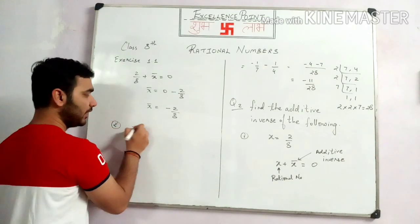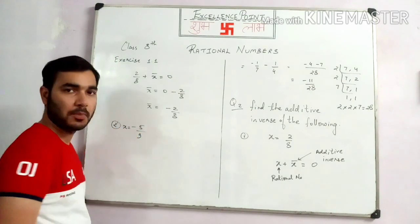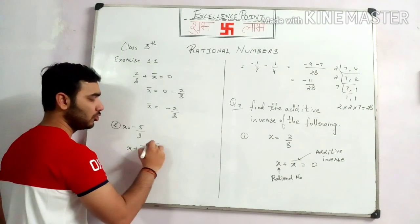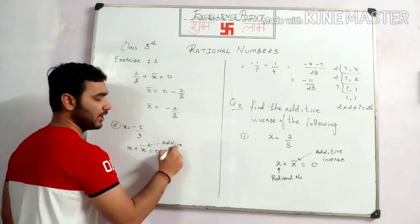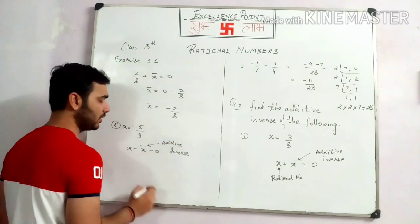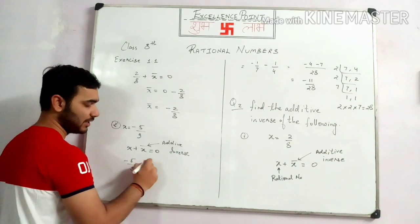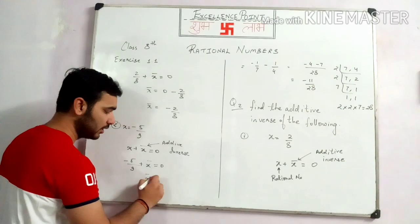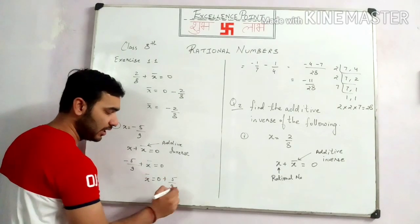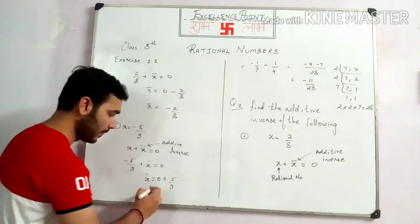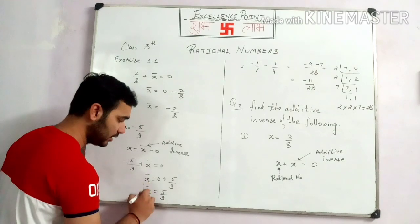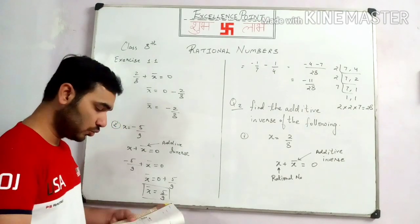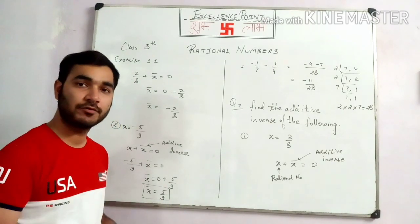The second question is x equal to minus 5 by 9. By the same rule: x plus x̄ is equal to 0, where x̄ is the additive inverse. So minus 5 by 9 plus x̄ is equal to 0. This is minus, and when we change the side it will become positive. So x̄ is equal to 0 plus 5 by 9. Any number added to 0 gives the number itself, so x̄ is equal to 5 by 9. Students, we are having three more questions which you have to do on your own.